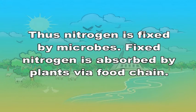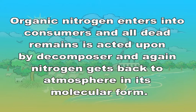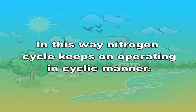Thus nitrogen is fixed by microbes. Fixed nitrogen is absorbed by plants, and via the food chain it becomes available to consumers. All dead remains are acted upon by decomposers and nitrogen gets back to the atmosphere in its molecular form. In this way, the nitrogen cycle keeps operating in a cyclic manner.